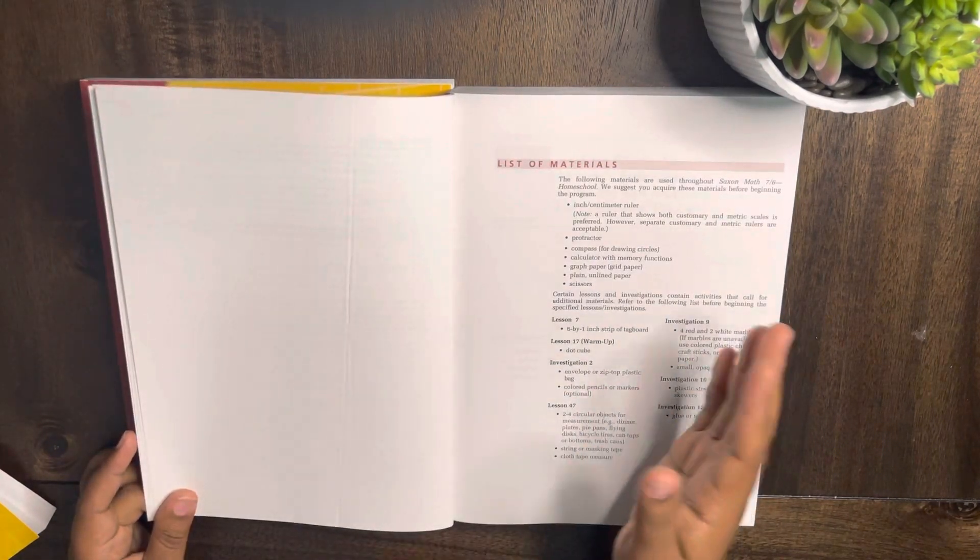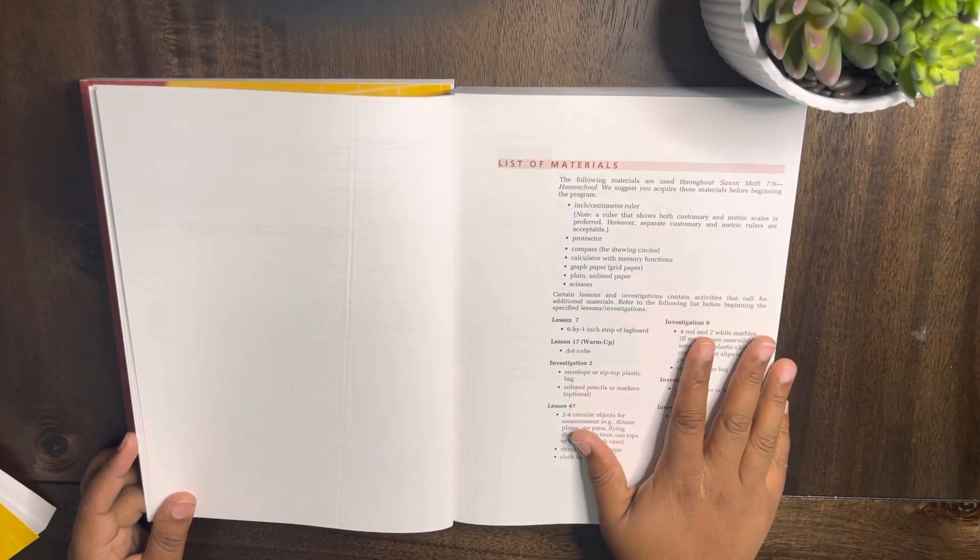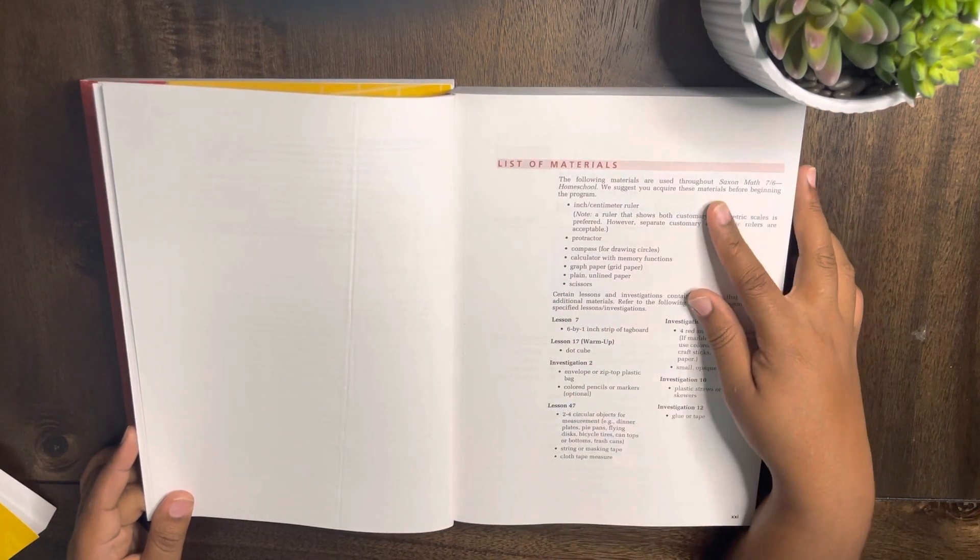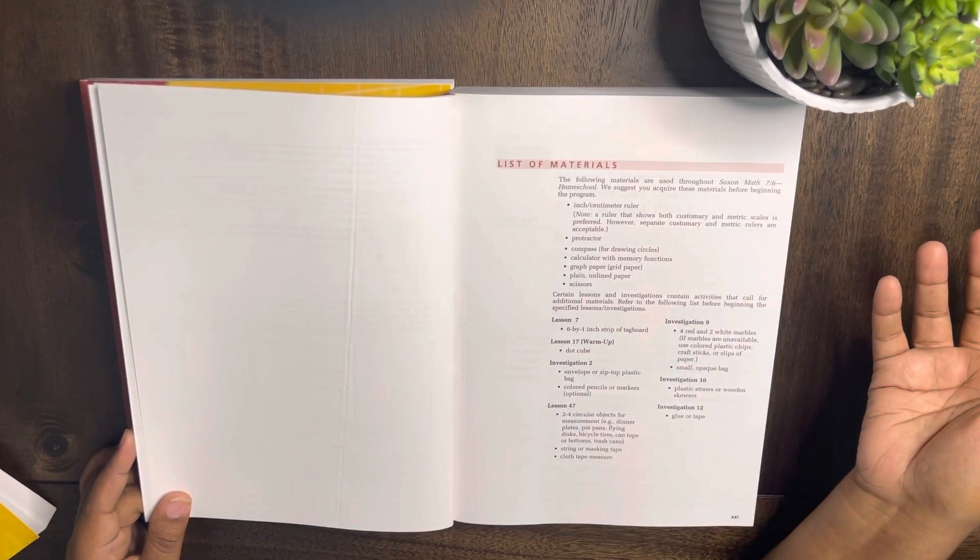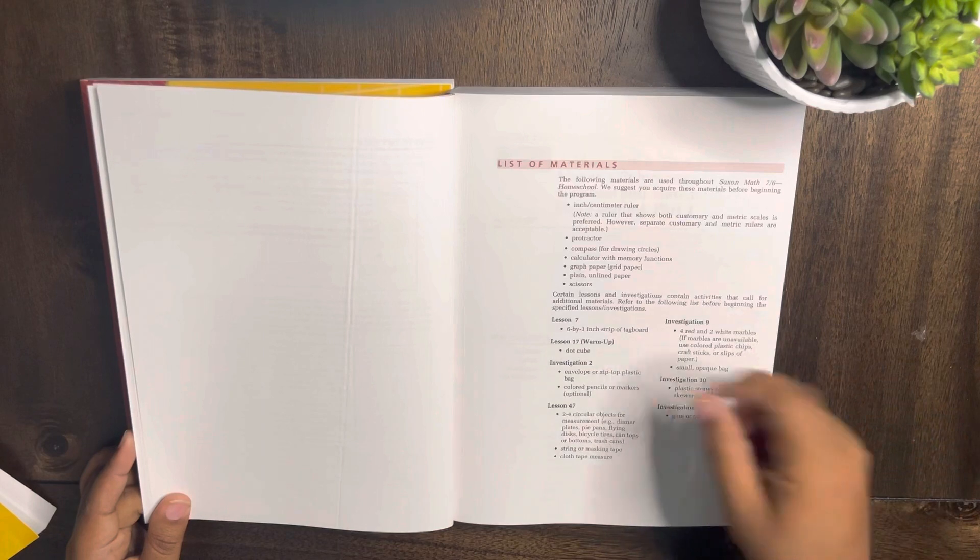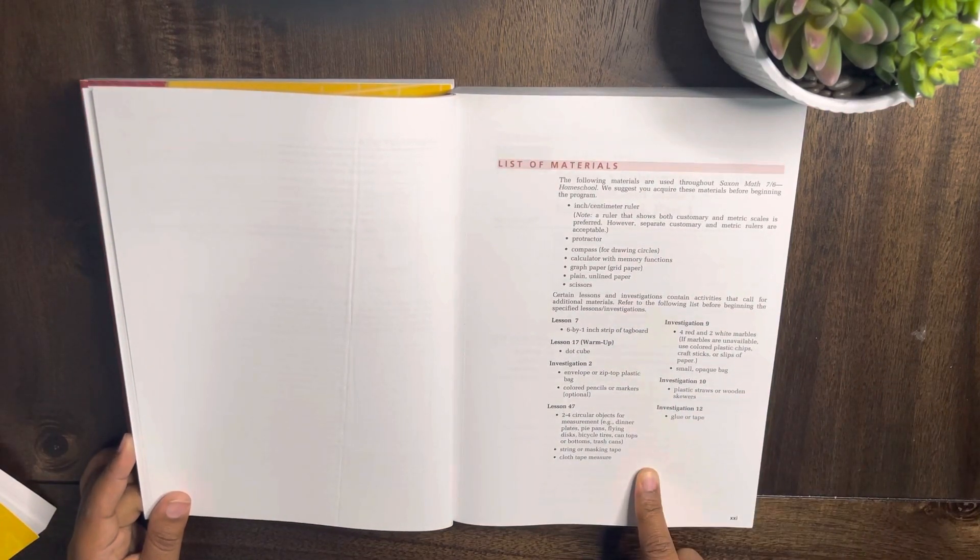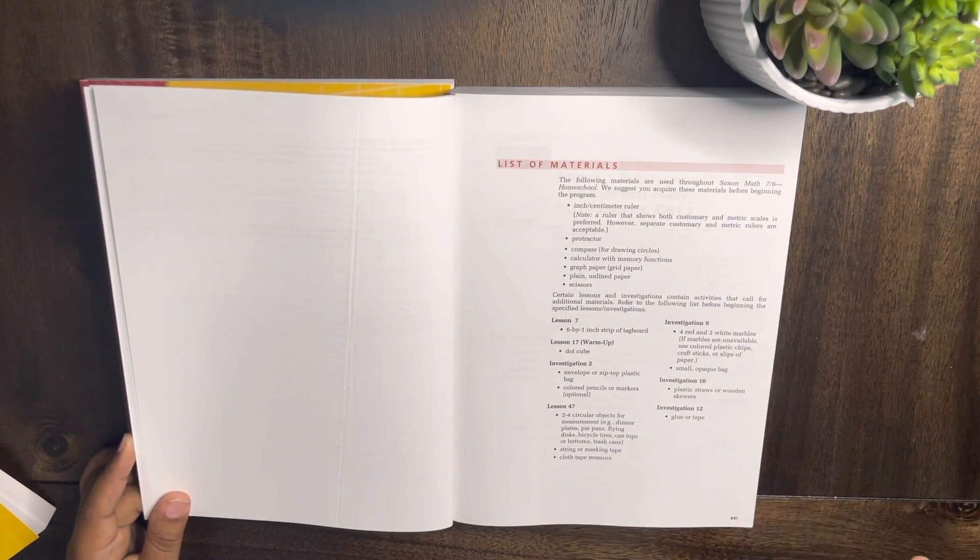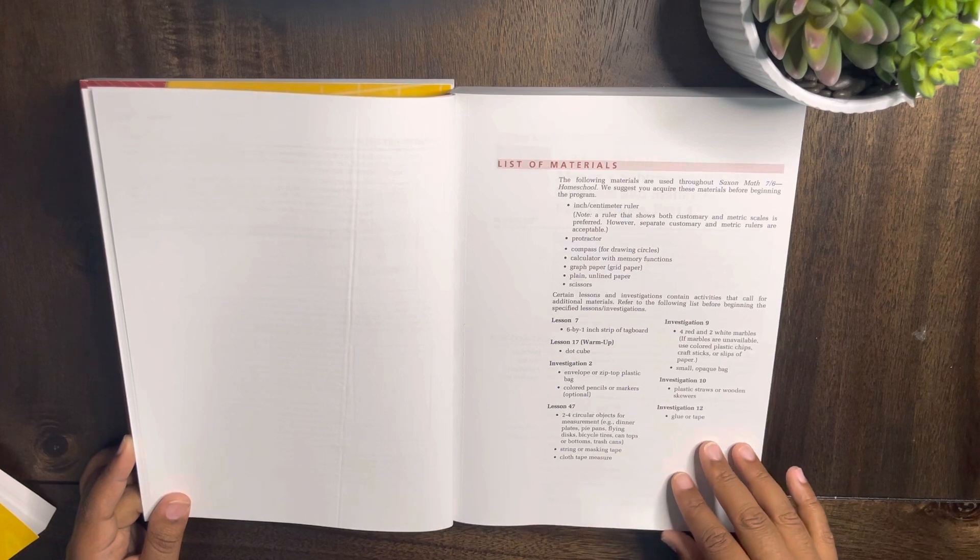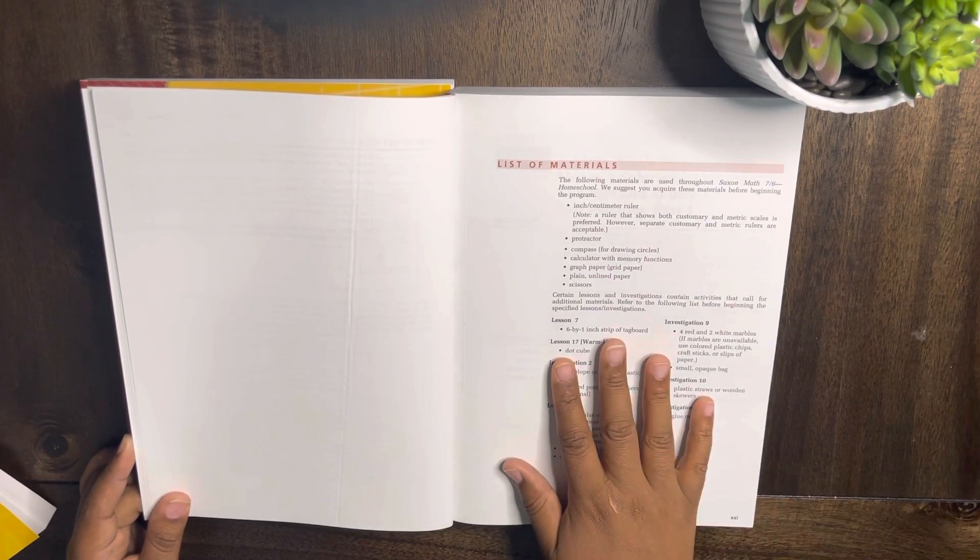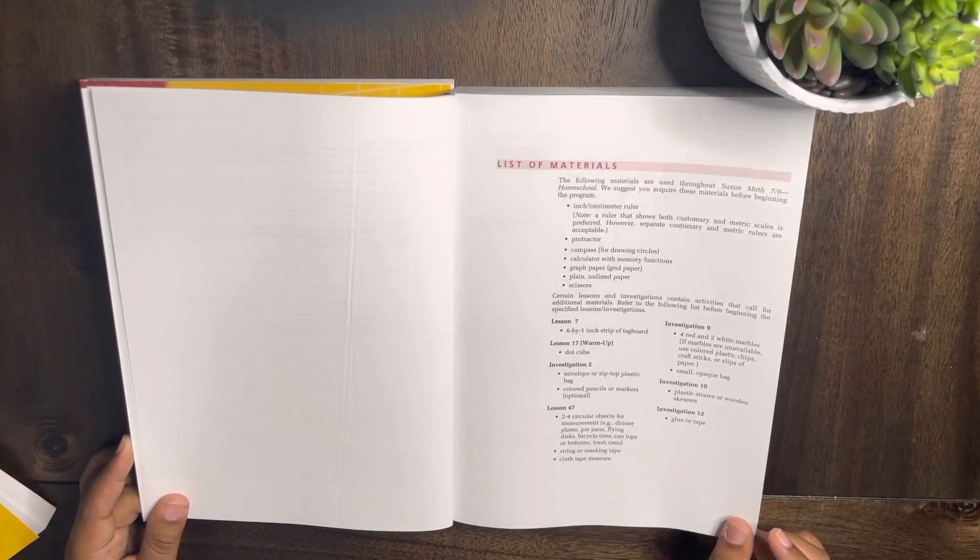The next thing they show you is a list of materials - ruler, protractor, compass, calculator, graph paper, scissors, tag board, dot cubes. Taking a quick look at this, most of these things you can get from the dollar store, so that is a good thing because you won't be spending tons of money to find the materials that you need for the lessons or the investigations.